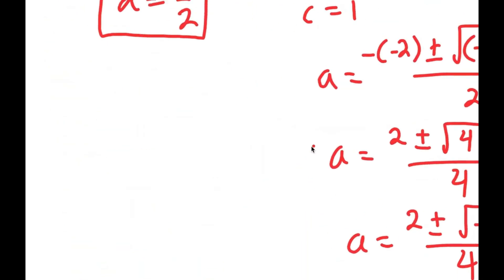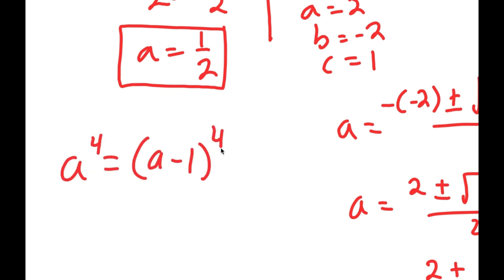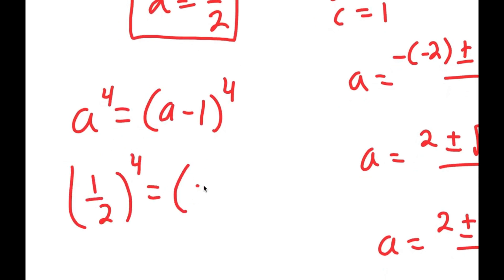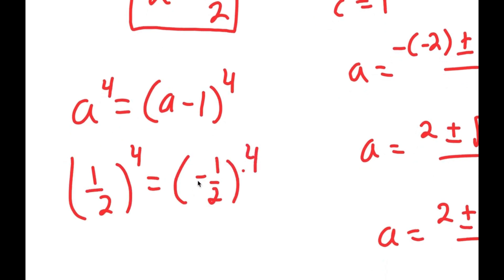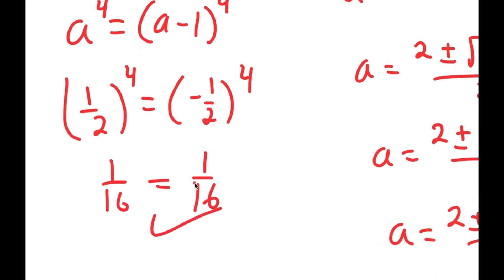Finally, to check: I can't verify the imaginary solutions, but for a equals 1 half: 1 half to the power of 4 equals negative 1 half to the power of 4, and both equal 1 over 16. So the solution is confirmed.